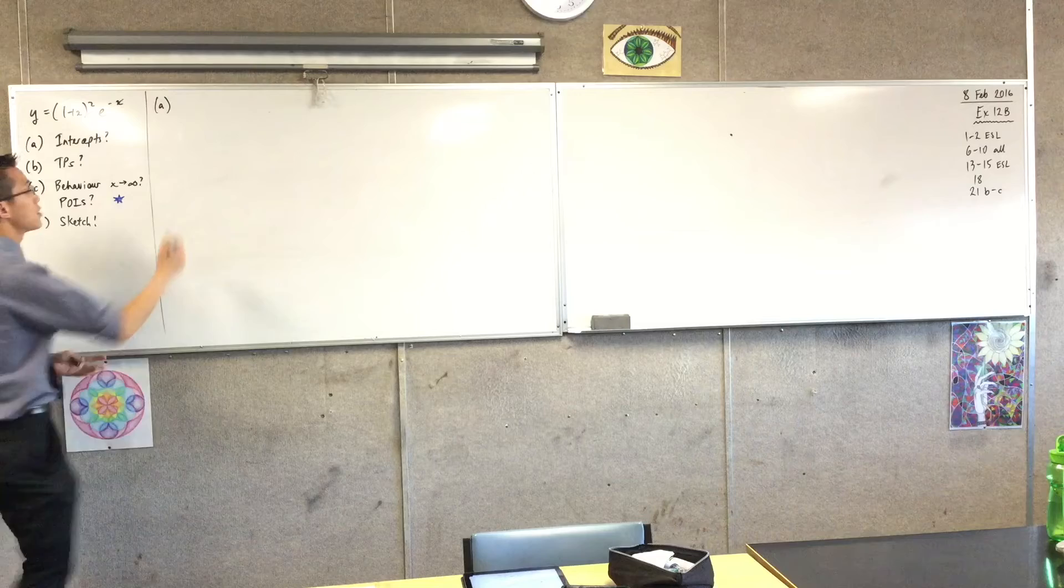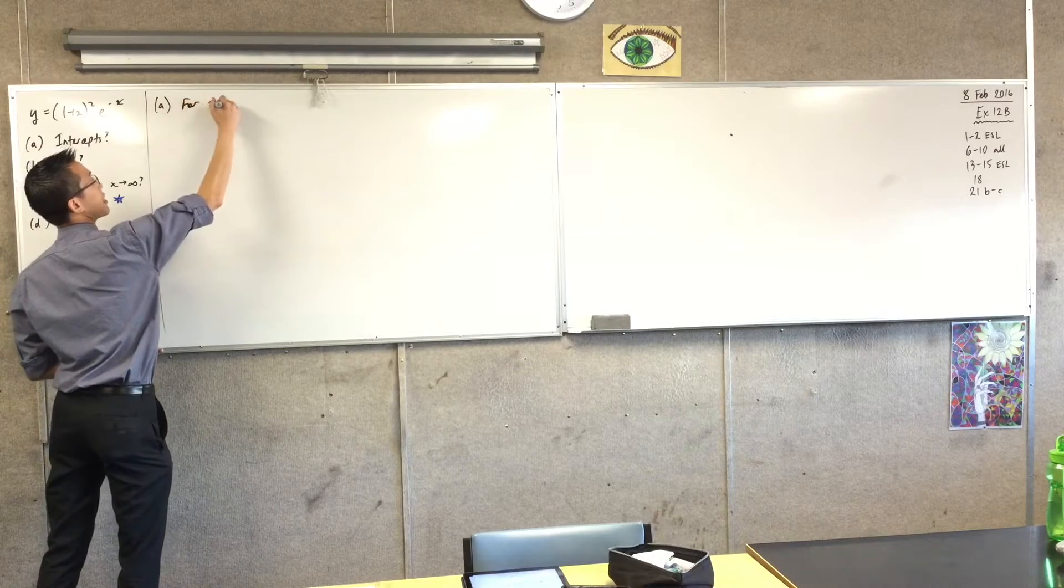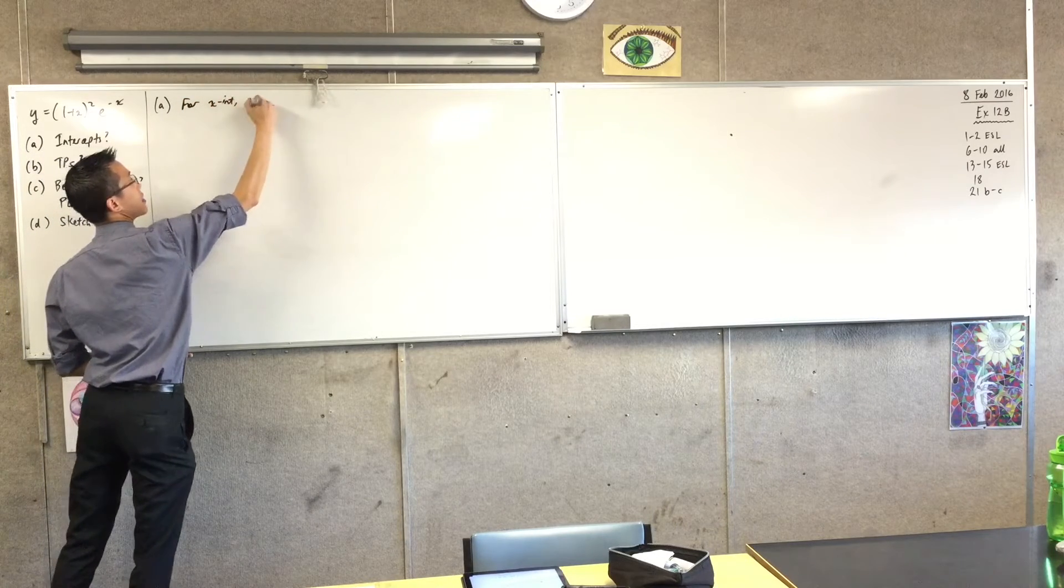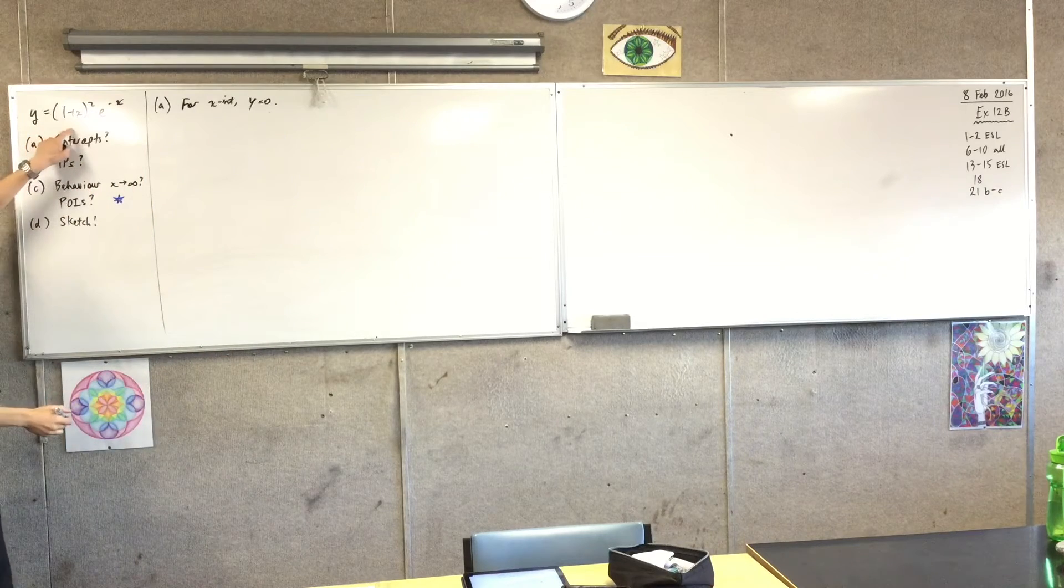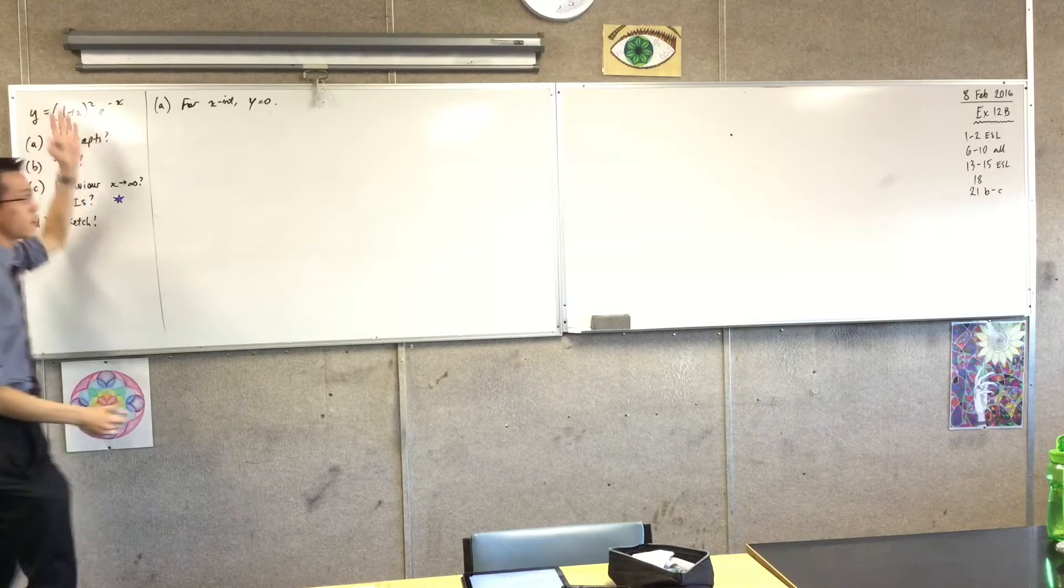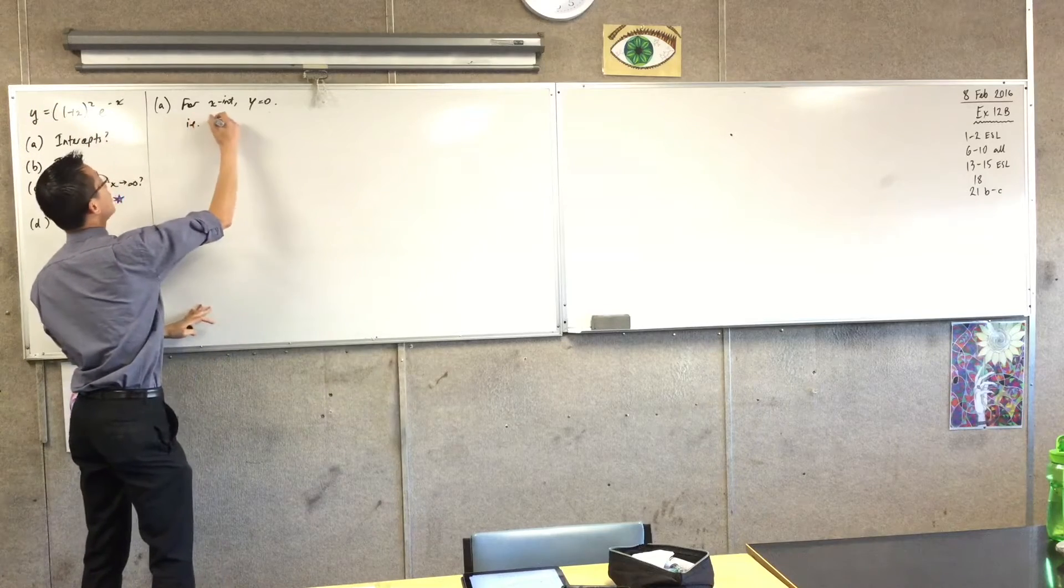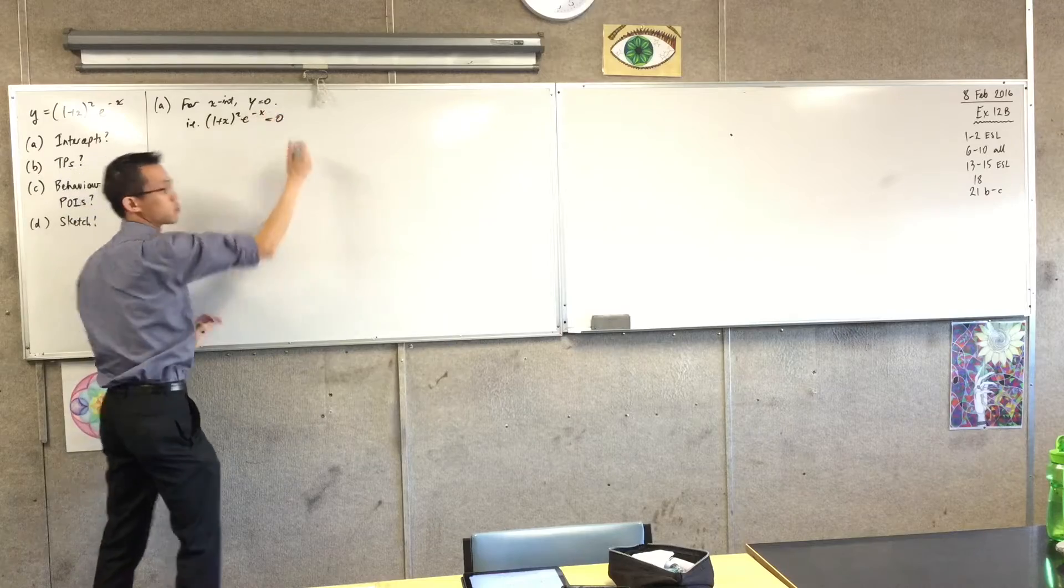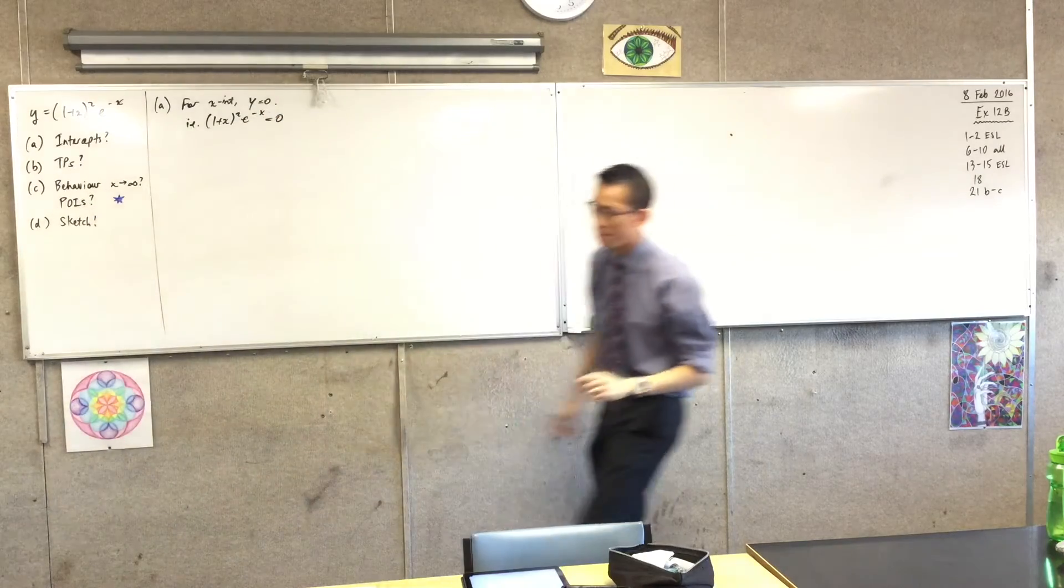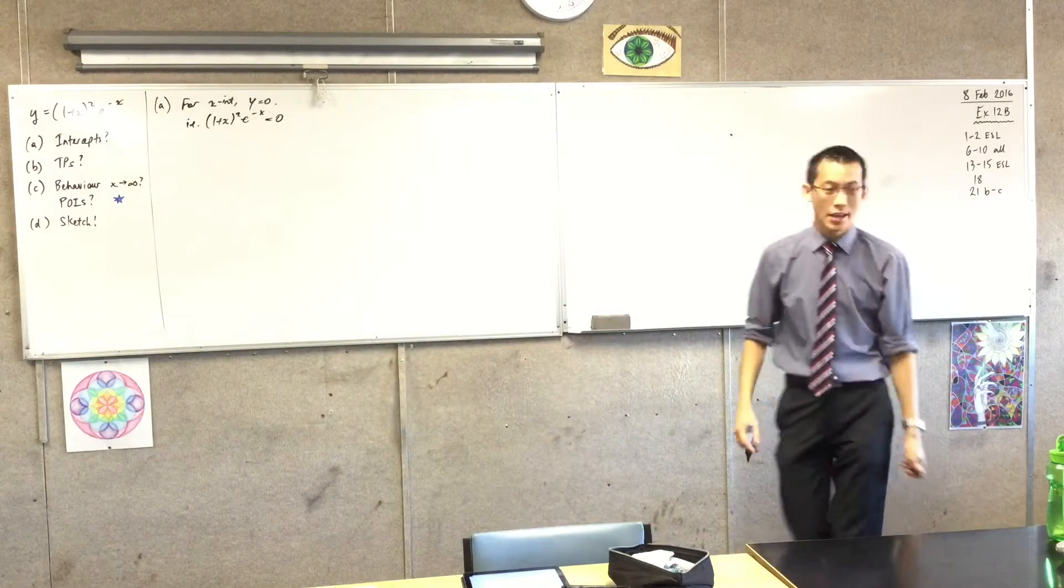y equals 0, so I'm going to set it out like this. For x-intercepts, y equals 0, which means y equals 0, so this thing equals 0. In other words, (1 + x)² e^(-x) equals 0. Come in, take a seat please. Now, minor note here, certainly not the most important thing about the question, but it's worth saying.